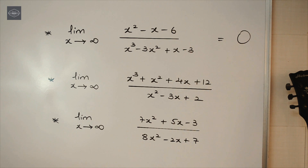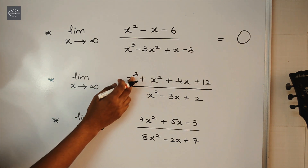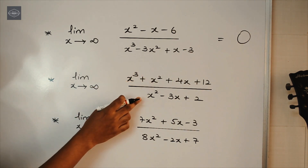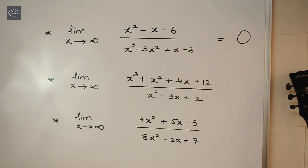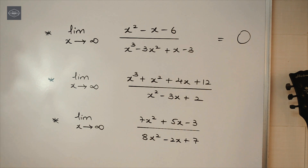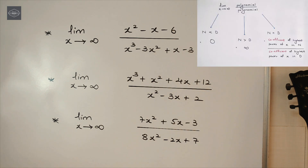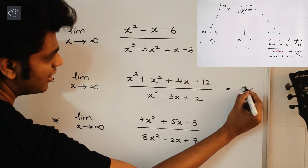Similarly, for the next one, the degree of numerator is 3 and the degree of denominator is 2. So the degree of numerator is greater than the degree of denominator. As per our condition, the answer of this function is infinity.